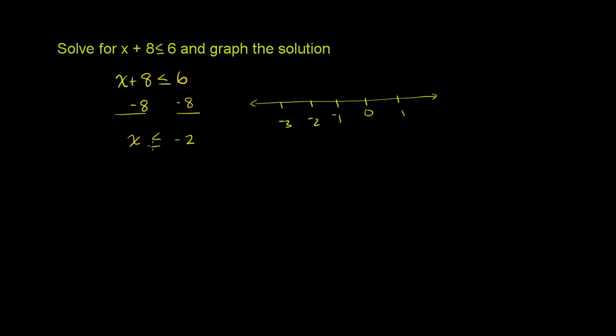We want all the x's that are less than or equal to -2. Since it can be equal to -2, we'll put a filled in line right here at -2, and all of the values less than that. If it was just less than, without the equal sign, we would have an open dot. But since there's less than or equal to, we've closed this dot, and then we want all of the values below that.